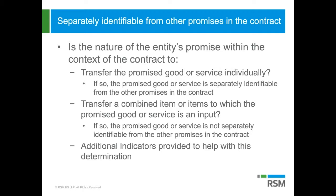The guidance provides some indicators to help evaluate this criteria, but it's going to involve a lot of judgment. One indicator is: is the promised good or service transferred individually? If it is, then it is separately identifiable. Another indicator is: is the transfer a combined item or items that the promised goods or services are inputs to? If so, then the promised good or service is not separately identifiable.